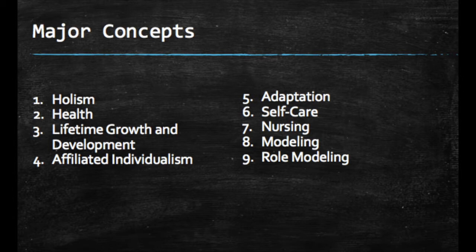The nine major concepts of the theory are that of holism, health, lifetime growth and development, affiliated individualism, adaptation, self-care, nursing, modeling, and role modeling.